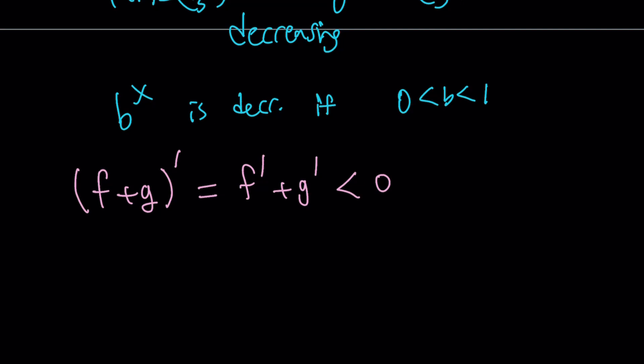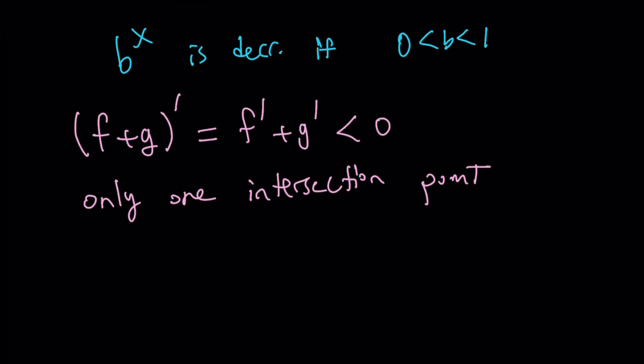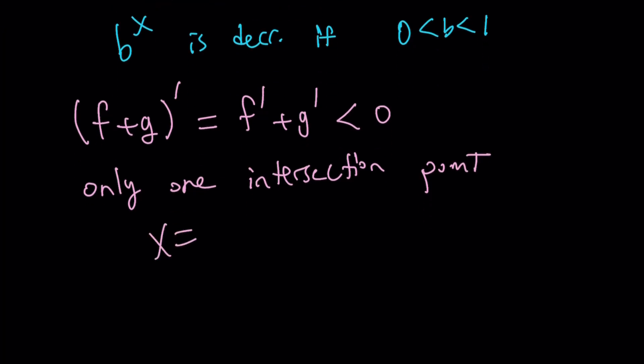All right. So we have a decreasing function that intersects a horizontal line. Therefore, there's only going to be one intersection point. OK, this might be one of the shortest videos, hopefully if I can get it done. So x equals negative 2 happens to be the only solution.